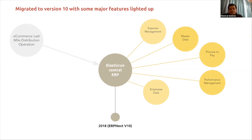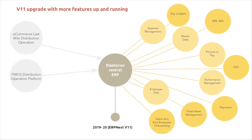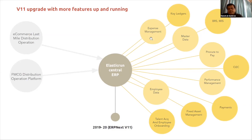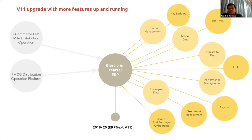In 2019-2020, we moved from version 10 to version 11, which had a lot of performance improvements and new functionalities. The migration was smooth — it took around 15-20 days mainly due to a Python upgrade since version 11 used a new Python version. Along with version 11, we enabled bank reconciliation, MIS reporting, complete sales processing, payments, and fixed asset management, ensuring most processes were digitized.